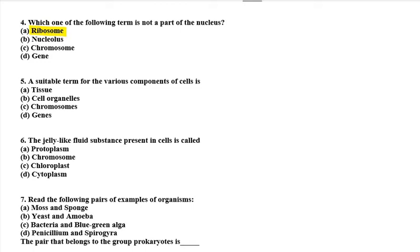Fifth question: a suitable term for the various components of a cell. The various components — the parts of cells that exist within the cell — are called cell organelles. So the right option is B, that is cell organelles. Moving to question six, the jelly-like substance found in the cell is cytoplasm.